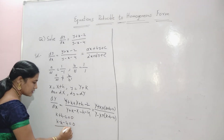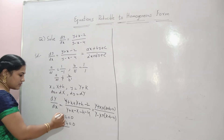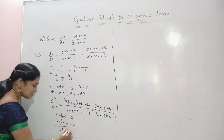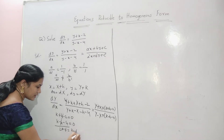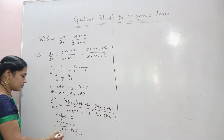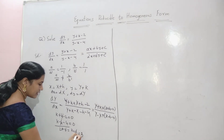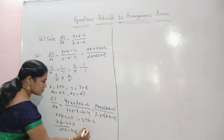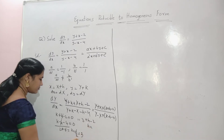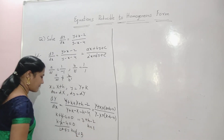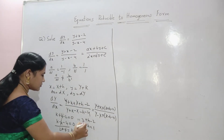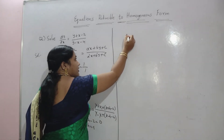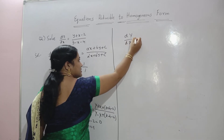Solve these two equations: k plus h minus 2 equals 0 and k minus h minus 4 equals 0. Adding them gives 2k minus 6 equals 0, so k equals 3. Substituting k equals 3 back: 3 plus h minus 2 equals 0, so h equals minus 1.